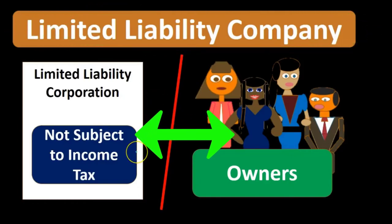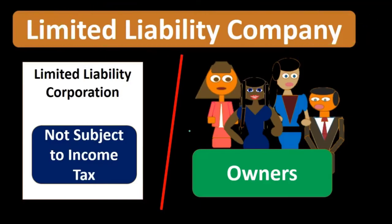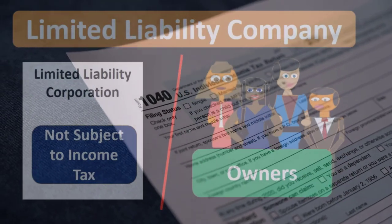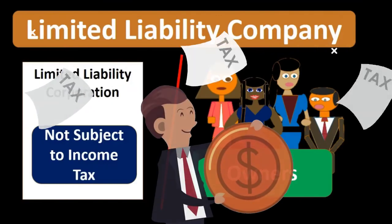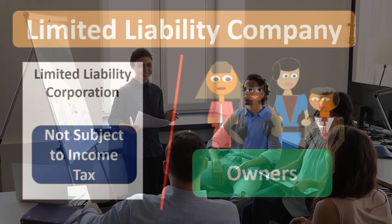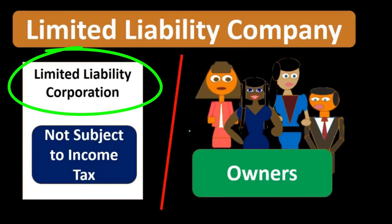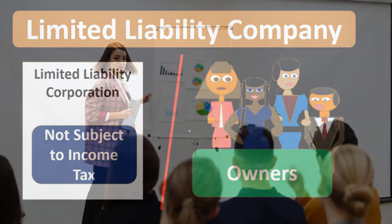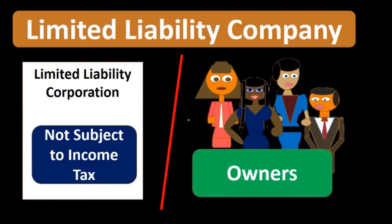A limited liability company looks to eliminate that double taxation problem by allowing the flow-through of income tax to the owners — flowing from the business entity to the individual 1040s, being taxed only at the individual level. So we have the best of both worlds: the liability protection as would be the case with a corporation, and the pass-through entity structure so that we avoid double taxation on both the business level and the individual level.